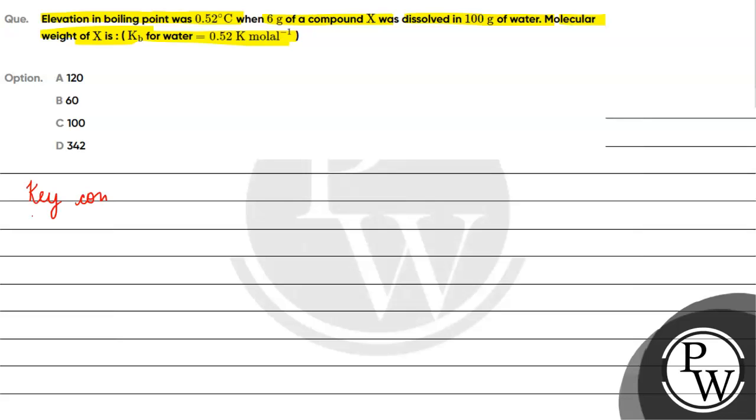The key concept for this question is elevation in boiling point. Elevation in boiling point is a colligative property. If we talk about the formula, it will be delta Tb equals Kb into M. M is molality.